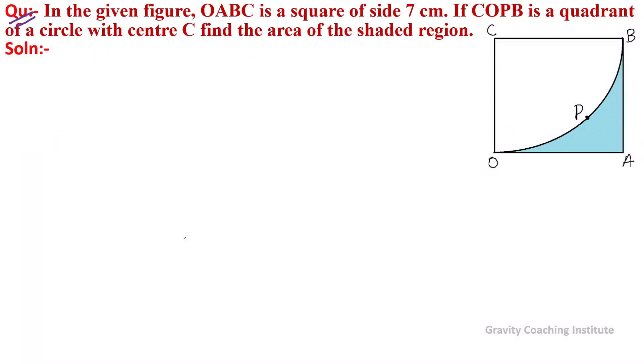In the given figure, OABC is a square of side 7 centimeters. If COPB is a quadrant of a circle with center C, find the area of the shaded region. We will find the shaded region as the square area minus the quadrant area.